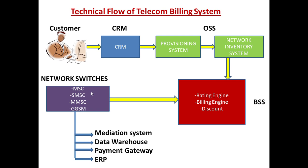The next main important part is Network Switches. All network switches provide the services — the actual service provision to the end user is the task of network switches. As it provides all the services to a customer or end user, the generation of usage details — also called the Call Detail Record (CDR) — is a task of these network switches. This detailed data is then provided to the BSS.